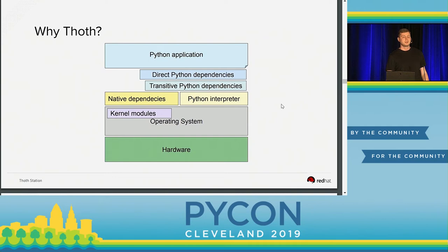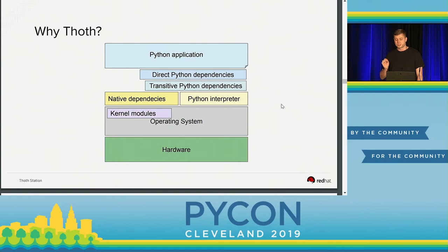You can imagine that if you make one single mistake in any item in this stack, your application will simply not work. If you make a mistake in your own Python application, you simply fix it — you wrote it, you own the code, you have the knowledge. But if there is an issue with direct dependencies, transitive dependencies, the Python interpreter, native dependencies, or kernel modules, it's much harder to fix.